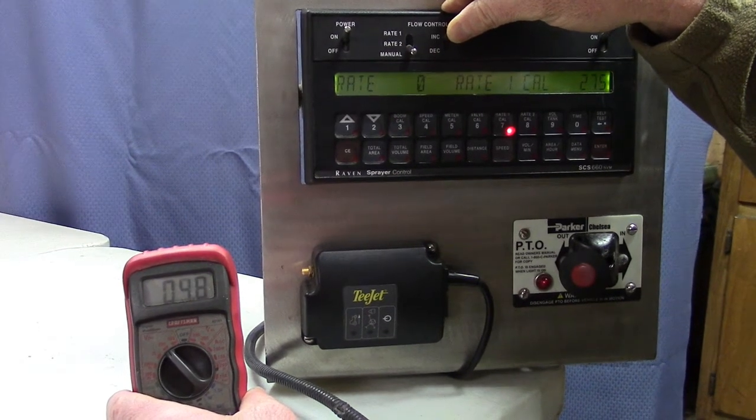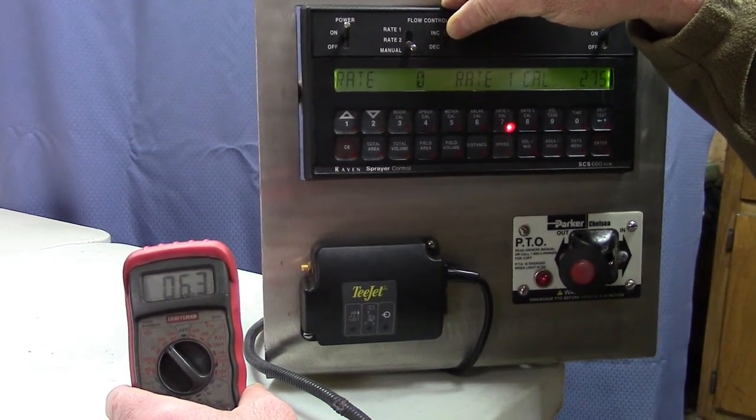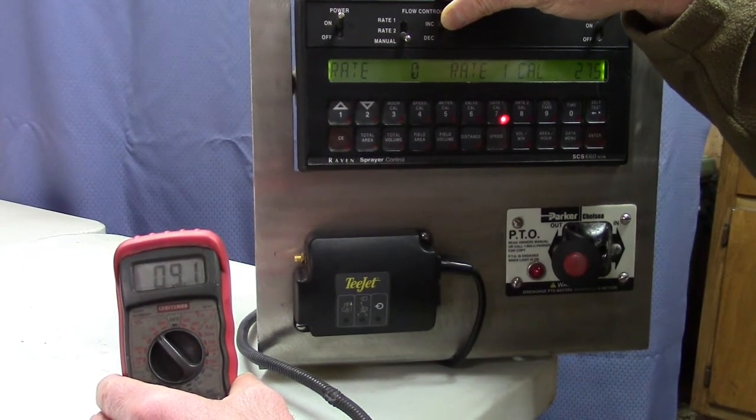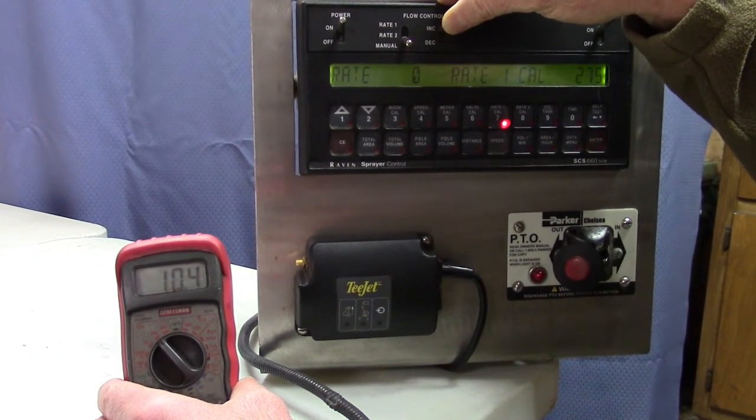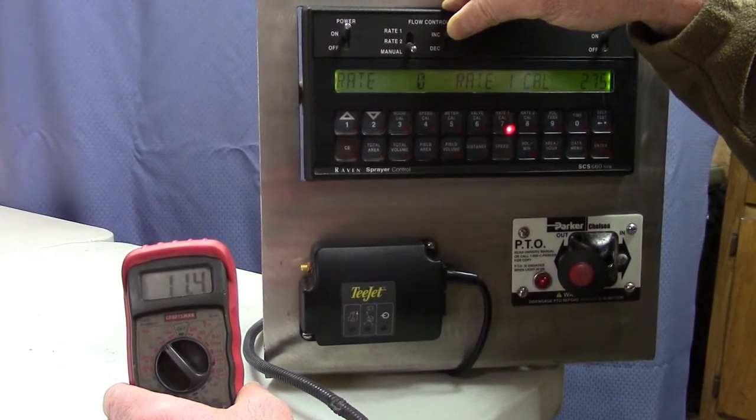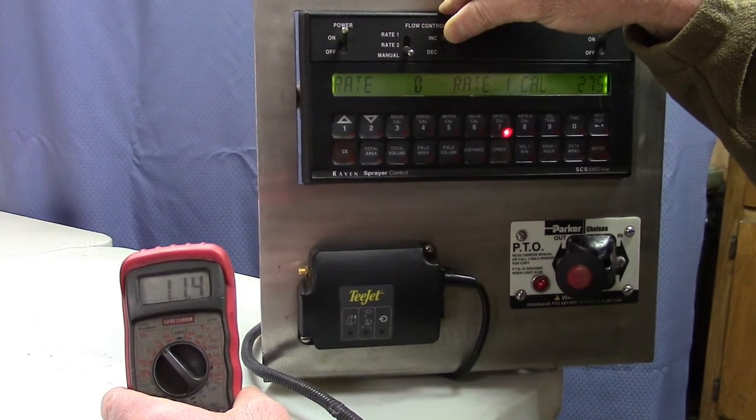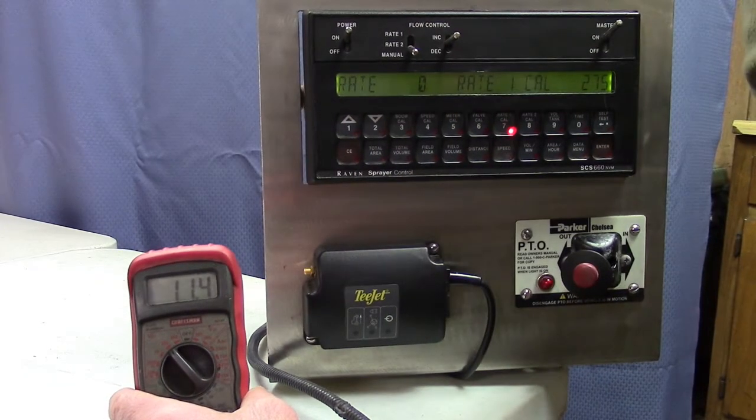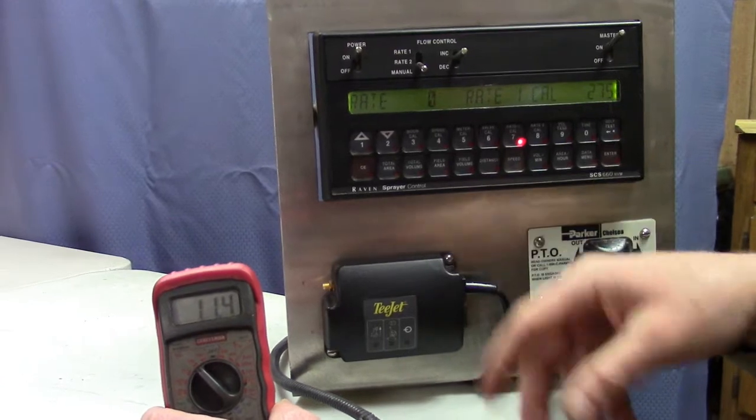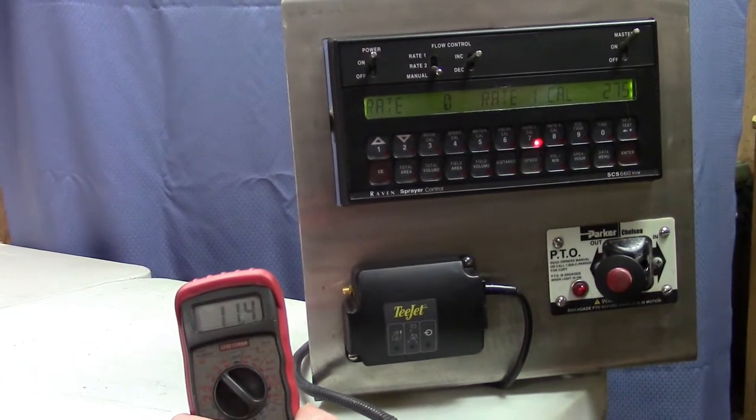The more voltage it has, the more oil is going through that valve. This way you can tell if the controller is correct. If it's not working this way, it went up to 11.4. But a lot of times when you have them hooked up to a truck and the engine is running, it will get up to 12 volts.